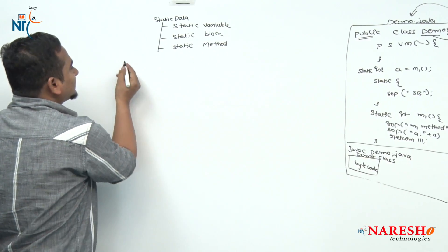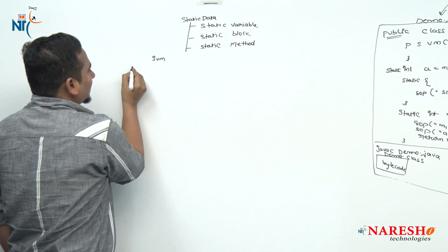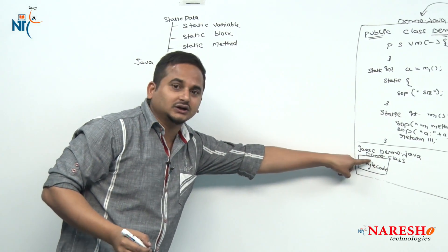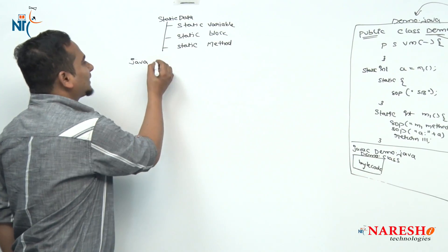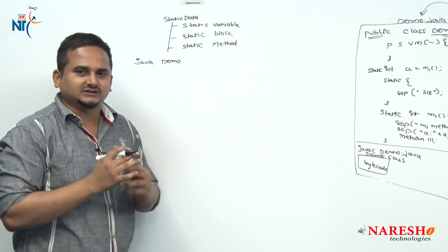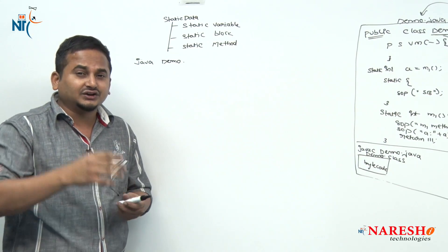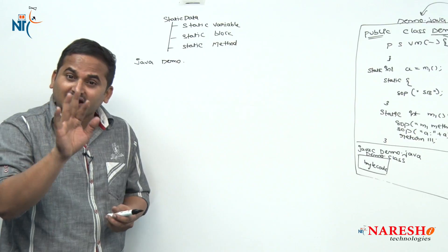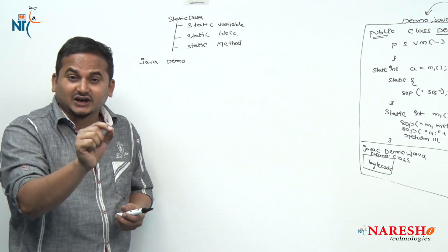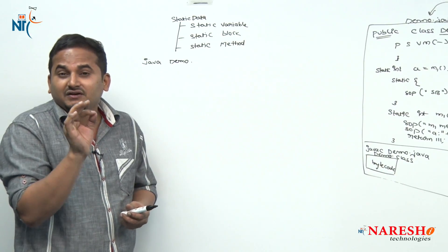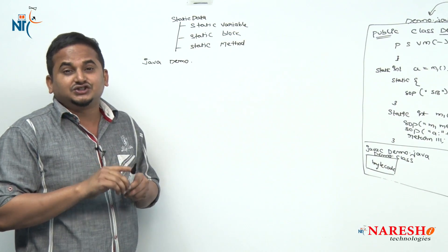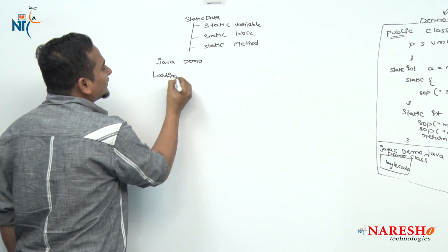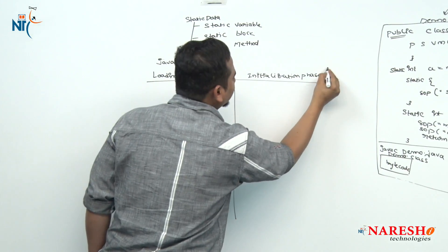How do we communicate with java? With the help of the java command. The java command is always followed by the class file — here simply I write 'demo.' Whenever we write like this, java comes into the picture: it will load Demo.class from secondary memory to primary memory. Java will do this in two steps — one is the loading phase, another one is the initialization phase.